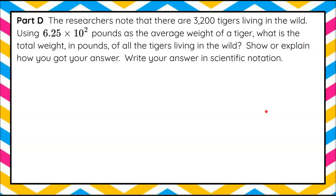All right, last part — here's part D. The researchers have noted that there are 3,200 tigers living in the wild. Using 6.25 times 10 squared pounds as the average weight of a tiger, what is the total weight in pounds of all the tigers living in the wild? You need to show or explain how you got your answer and write your answer in scientific notation. Go ahead and pause, do your best work, and then come back.